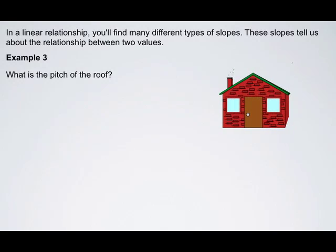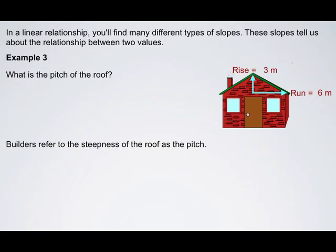Here we have a roof. It has a rise of 3 meters and a run of 6 meters. Calculate the pitch of the roof. Well, builders refer to the steepness of a roof as its pitch. Steepness and slope are very similar. Try calculating the pitch of this roof, and then come back to check and see if your response is the same as ours.